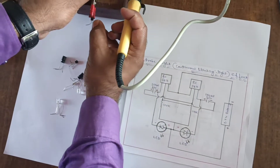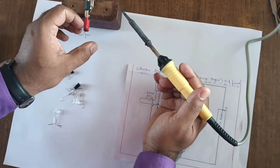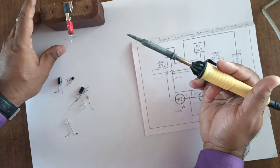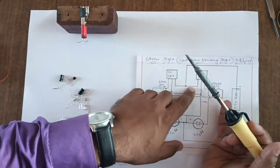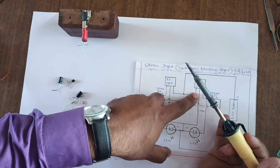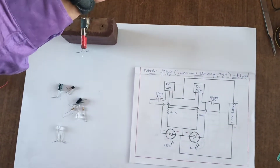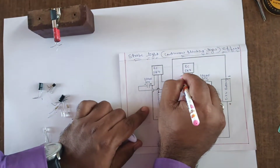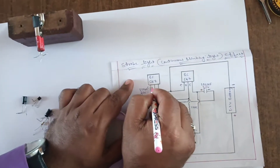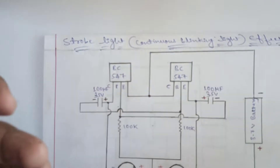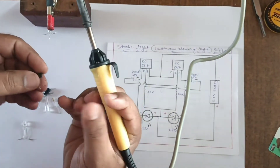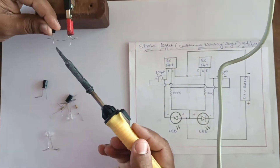Take one BC547 transistor. It has three terminals: the first is the collector, second is the base, and third is the emitter. Connect the first BC547 transistor to the second BC547 transistor, collector point to emitter point. This is the collector, this is the base, and this is the emitter of the first transistor. The second transistor has the same: collector, base, and emitter. Connect collector to emitter.